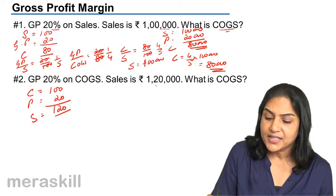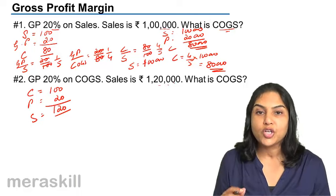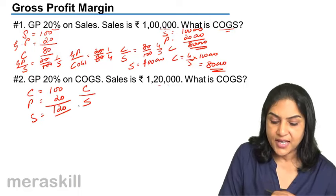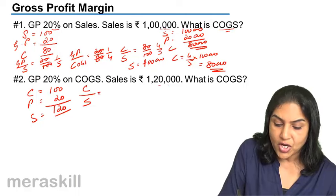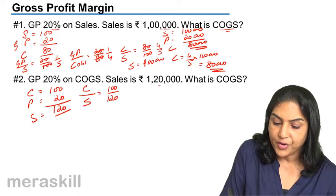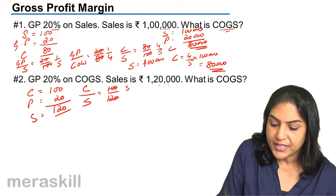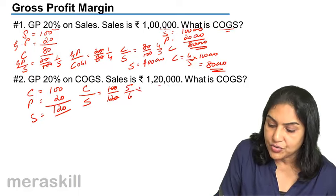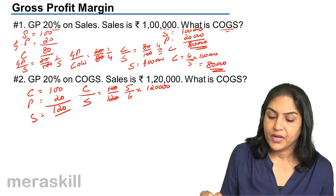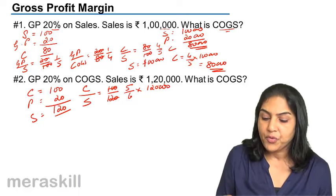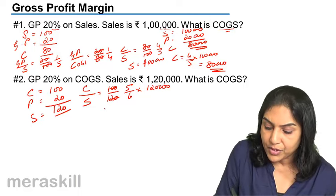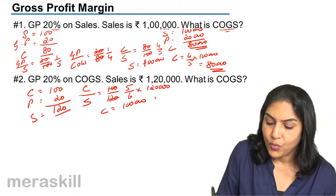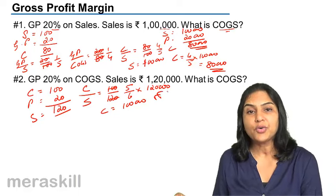Sales is given to us and we have to find cost of goods sold. Cost is 100 and sales is 120, so cost by sales is 100 by 120, which simplifies to 5 by 6. When sales is 1 lakh 20, cost equals 5 by 6 of 1 lakh 20, which gives us cost of goods sold equal to 1 lakh.